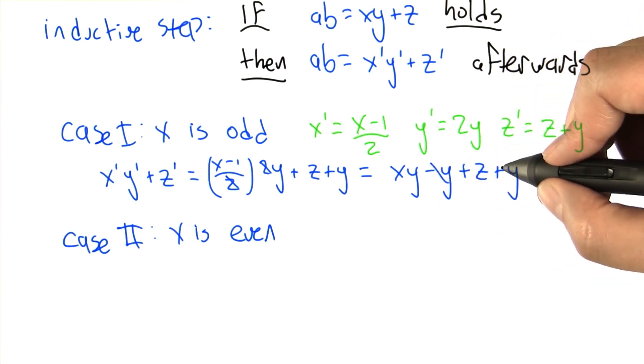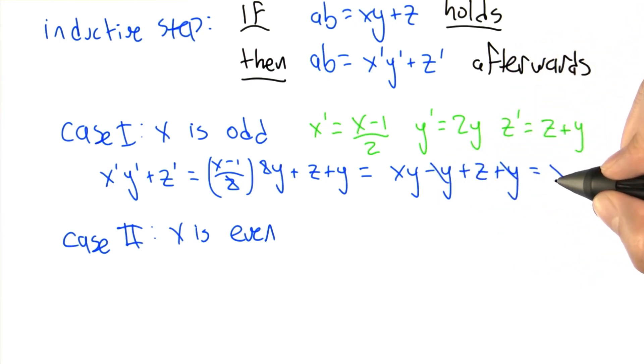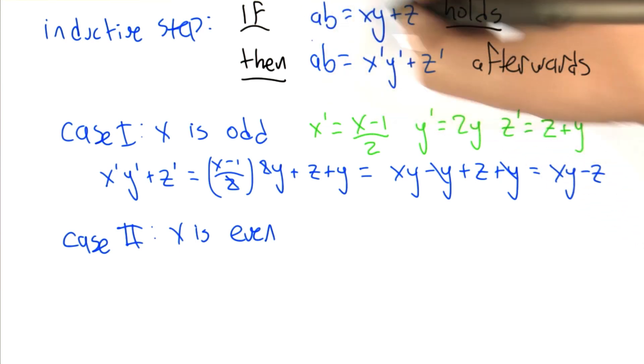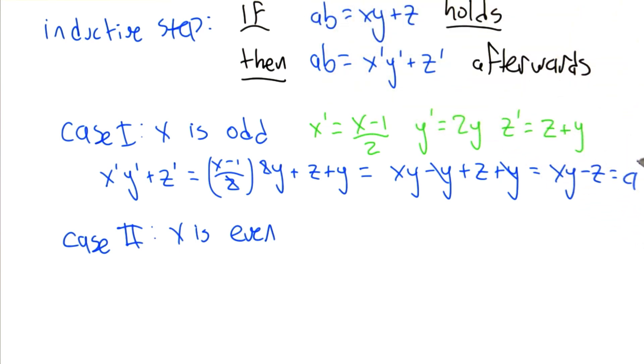And again, the plus y and the minus y cancel. And we do indeed get xy plus z, which we had assumed holds in advance. So that's a times b.